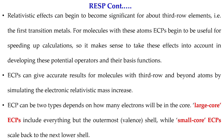ECPs can also be of two types. Large core ECPs treat everything except the outermost shell in the core, keeping only the outermost electrons in the valence. Small core ECPs include more electrons explicitly in the valence shell, with fewer electrons treated as core — so you define more electrons in the valence cell explicitly.